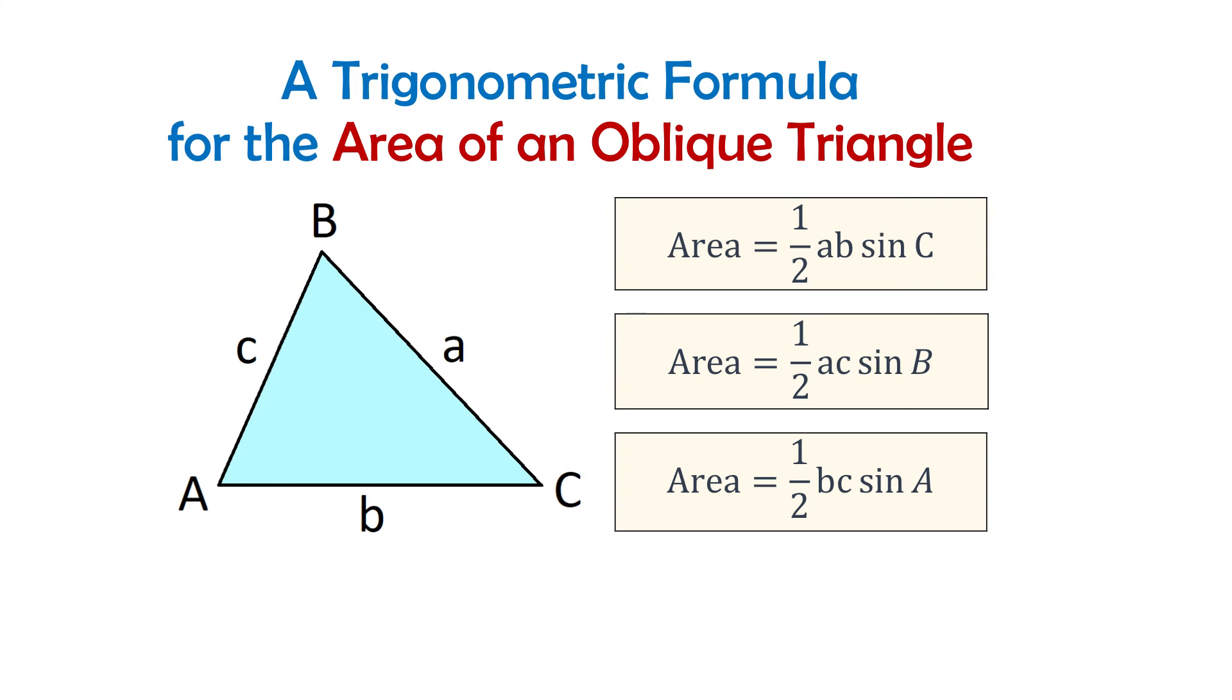The first one is one half times side a times side b times sine of the included angle C. The second one is one half times side a times side c times sine of the included angle B, and the third one is one half times side b times side c times sine of the included angle A.